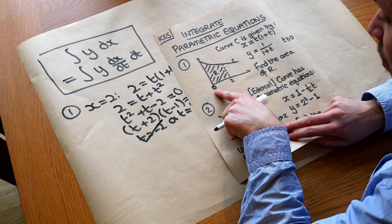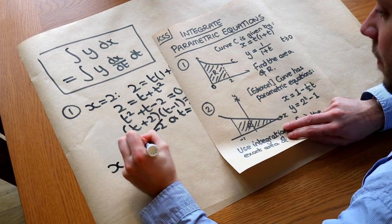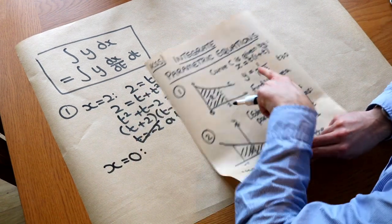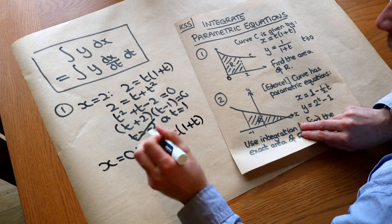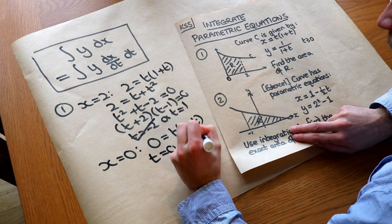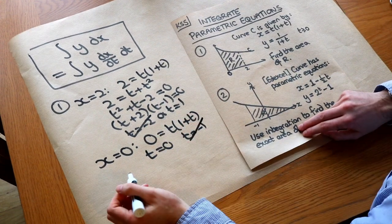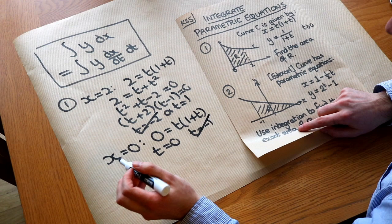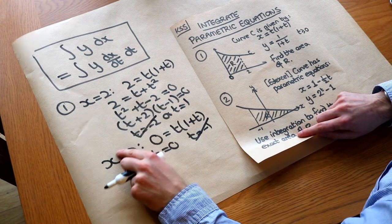Similarly, if X was this lower limit of 0 on our area, let's work out the equivalent T. So we've now got 0 equals T times (1 plus T), and that means that either T is equal to 0 or T is minus 1, and again T has to be positive or 0, so we get rid of that. So we've now got our new limits of 0 and 1 instead of X values of 0 and 2.